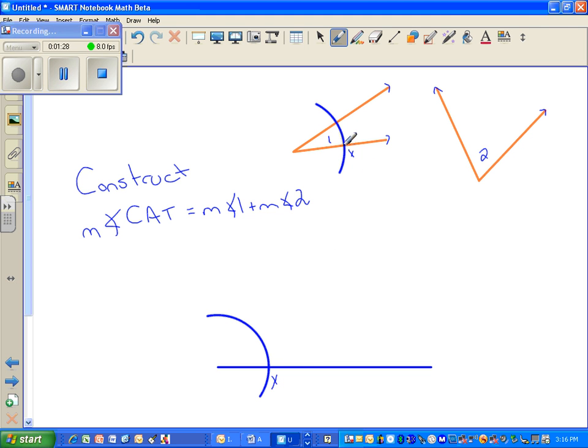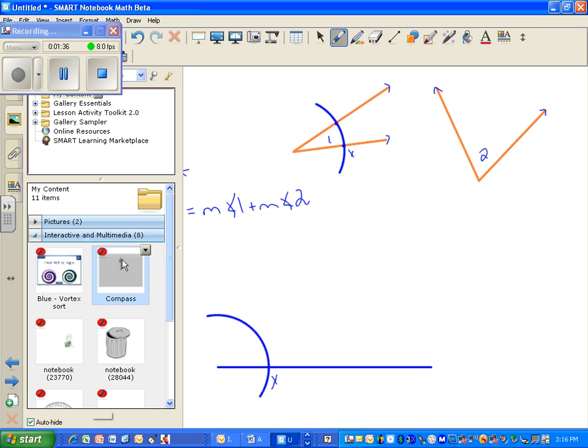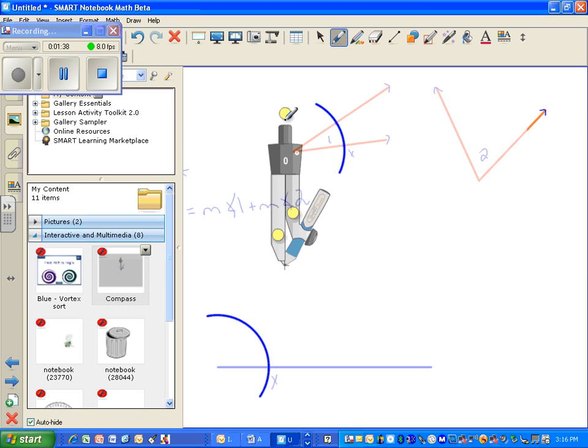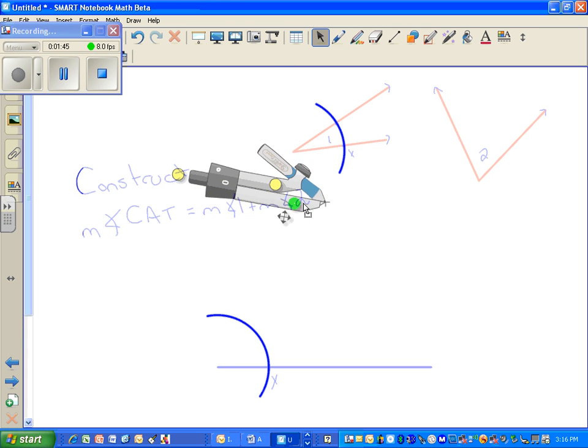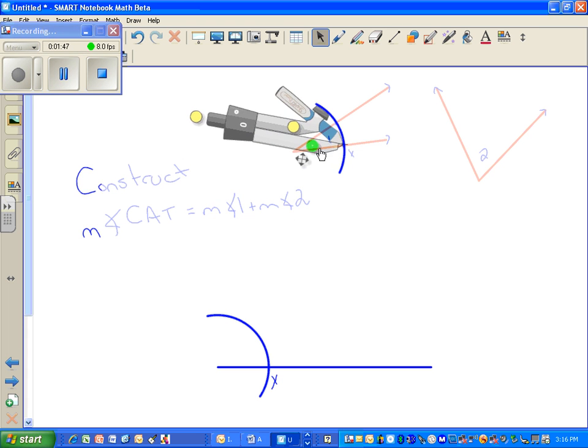They're both the same distance from the vertex. Now, what I'm going to do is I'm going to measure from this point X on my original up to where the arc intercepted the second ray. So again, I'm going to grab my compass, and I'm going to extend the distance between the tip of my compass and the tip of my pencil on my compass so it measures that distance.